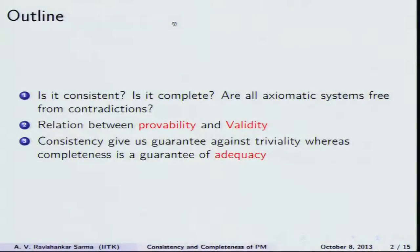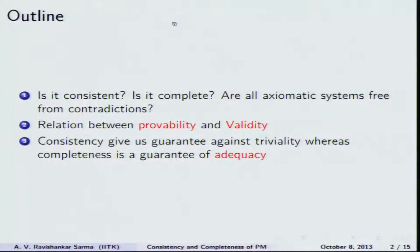The outline of this talk: Is Principia Mathematica consistent? Is it complete? Are all axiomatic systems we discussed free from contradictions — meaning within your given axiomatic system you should not derive contradictions? As we have seen, if you start with contradictions you can derive anything, as shown in the last few classes.